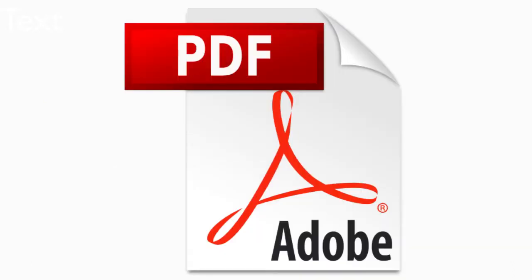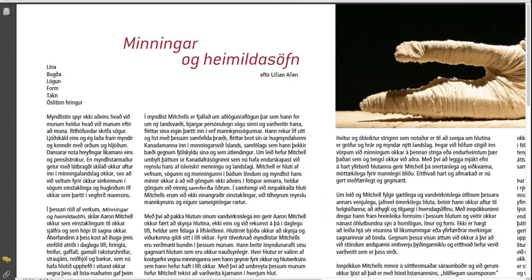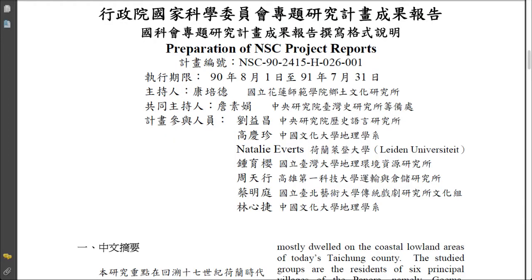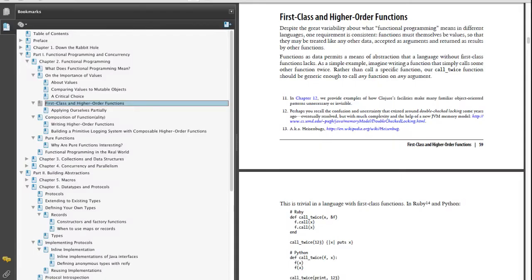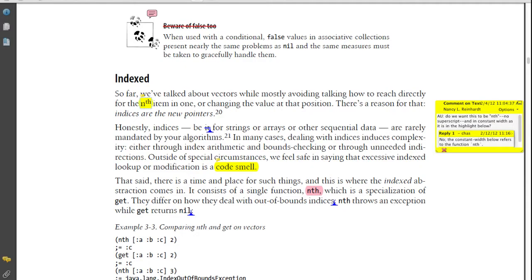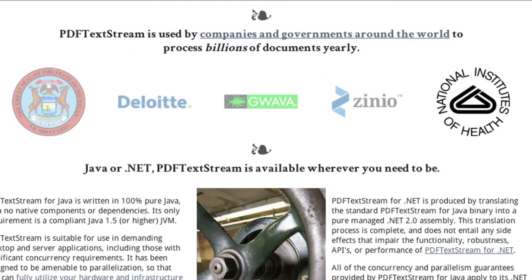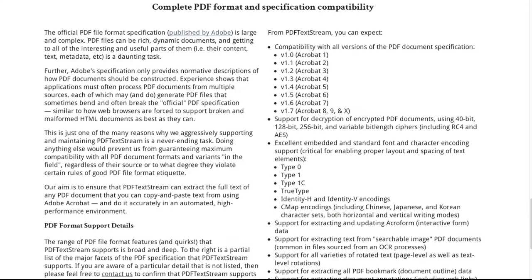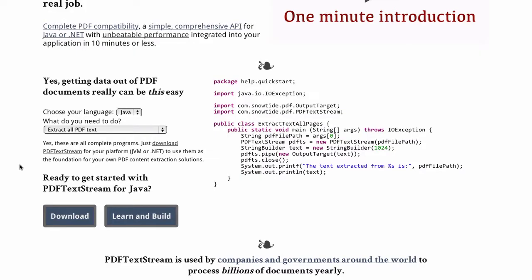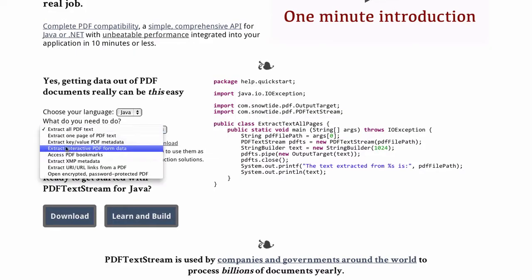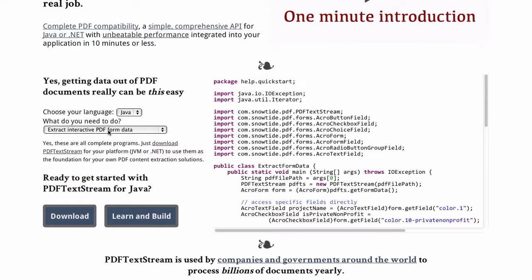If you need to enable your application to access the content contained in PDF documents, including text in any layout or language produced by any PDF document generator, tabular data, form data, bookmarks, annotations, and more, then PDF TextStream is for you. It's used by companies and governments large and small to process billions of PDF documents each year, thanks to its unmatched PDF format compatibility and support, demonstrably unmatched performance and text extraction accuracy, and a simple, easy-to-use API that enables you to avoid the messy implementation details of how PDFs are constructed.